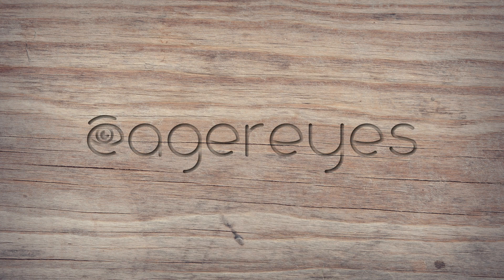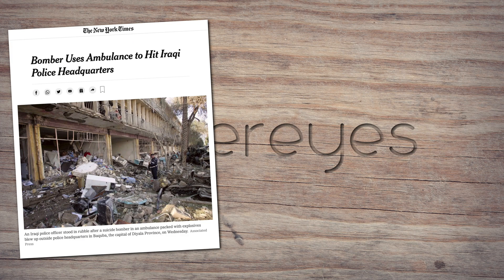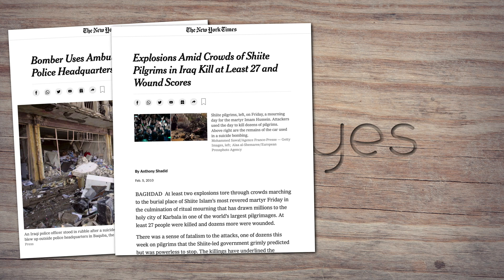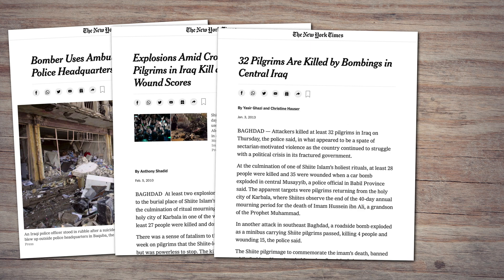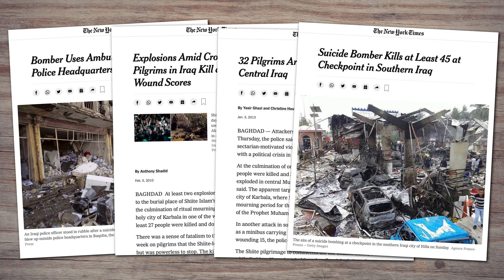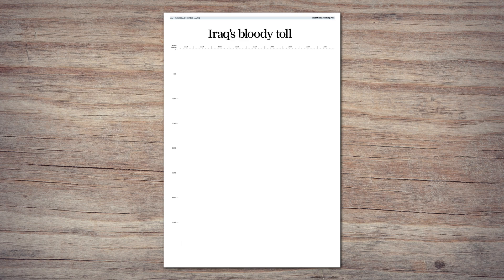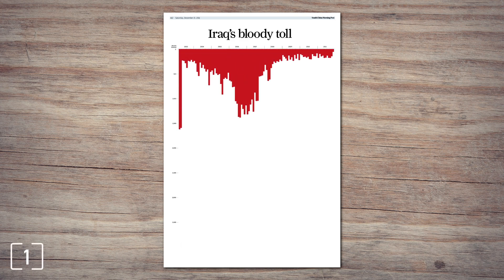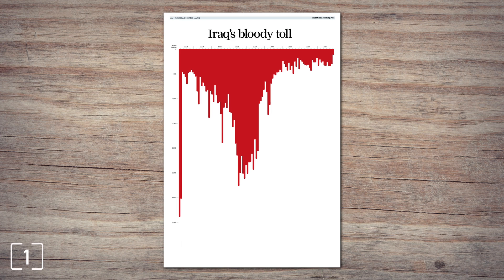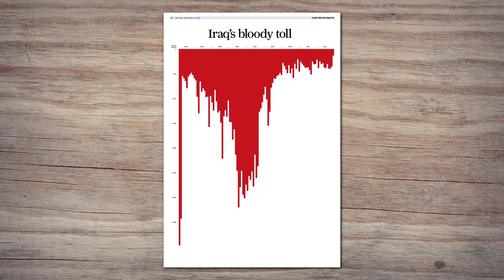During the Iraq war from 2003 through 2013 or so, you'd see headlines like these every day: 27 people killed here, 32 there, 45 the next day. The numbers made you numb and you just stopped caring or even paying attention. This is why Simon Scarr created this piece for the South China Morning Post. It reminded people what the abstract numbers were about — the suffering and death of over 100,000 people.